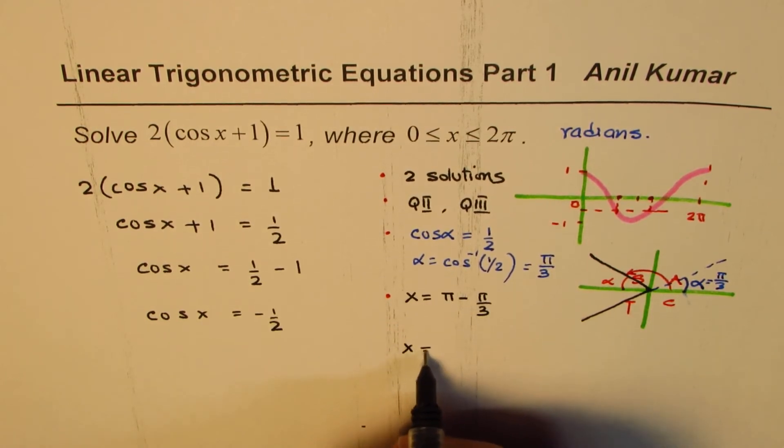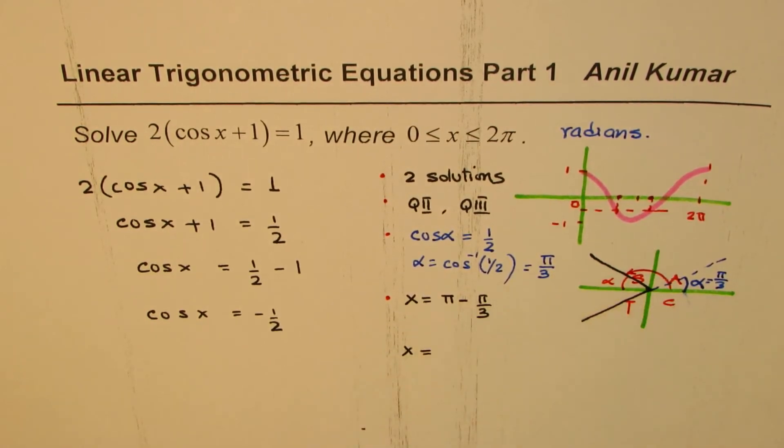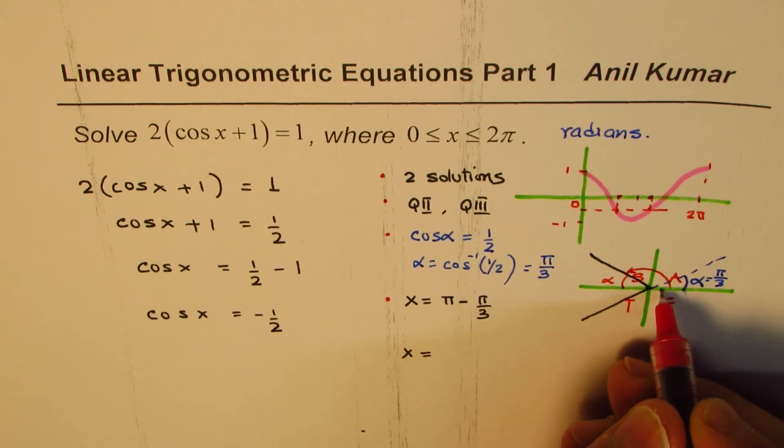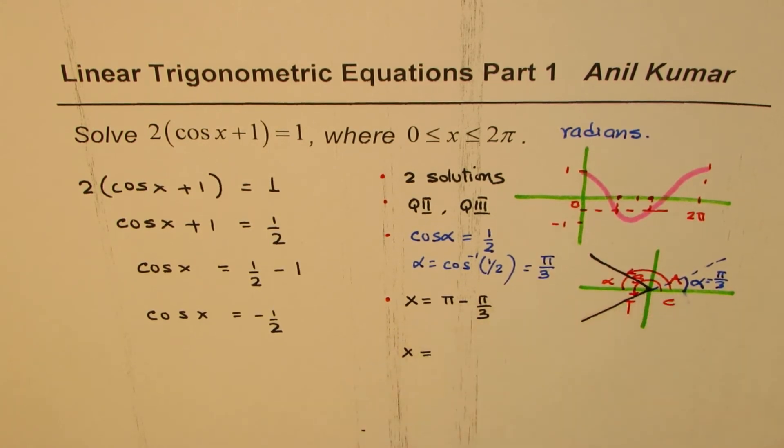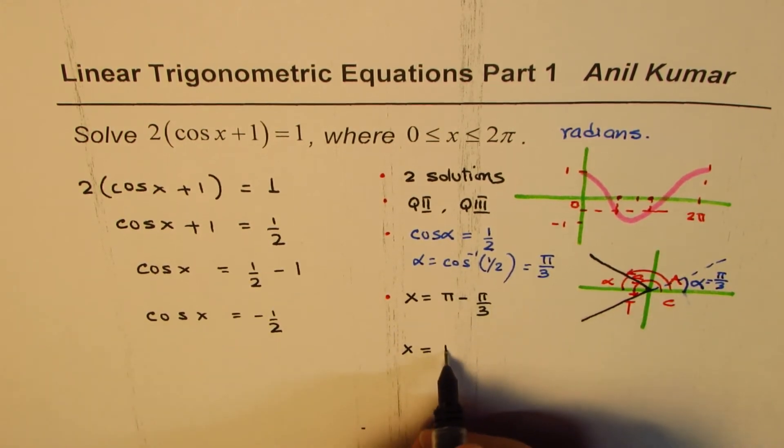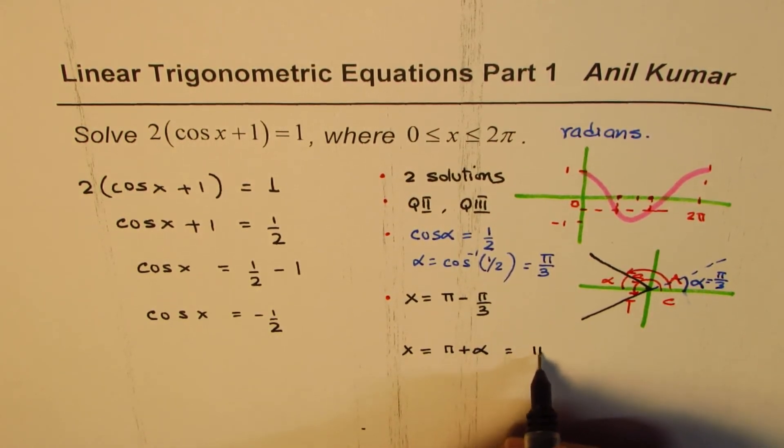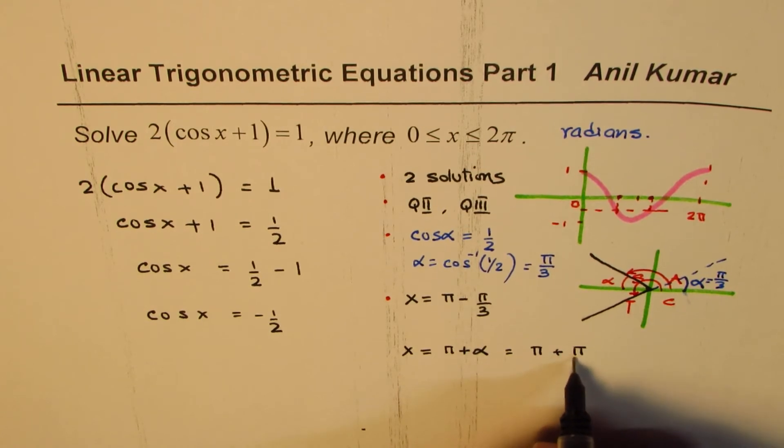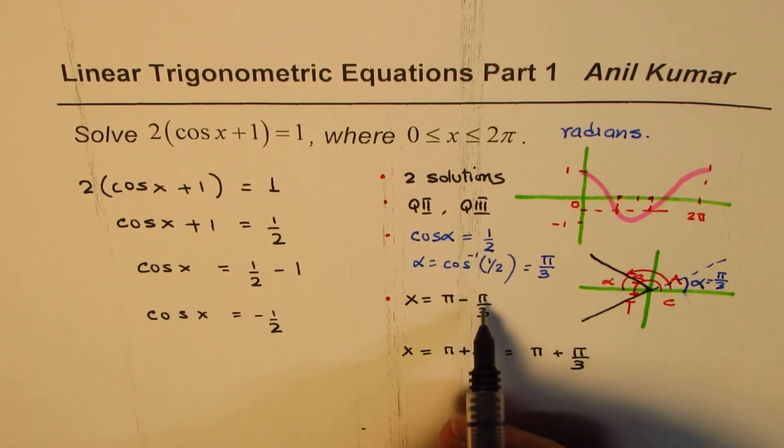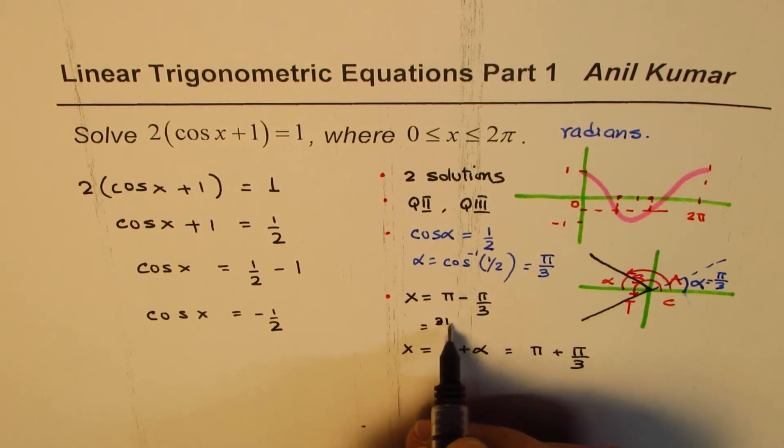The other solution is x equal to that one, which is this, so we add α to π. So π + α, where α is π/3. So we could say π + π/3.